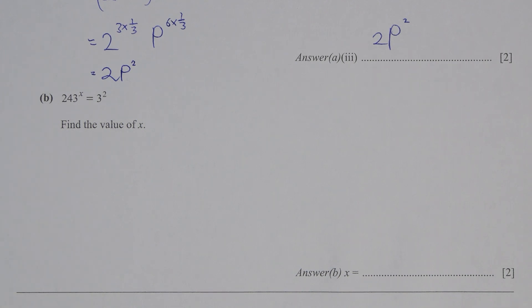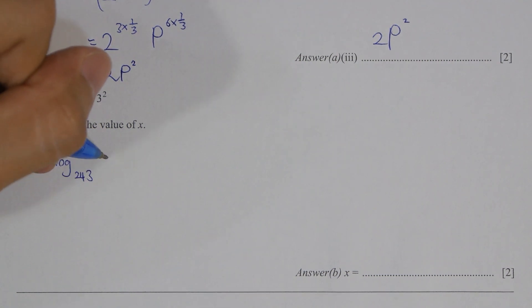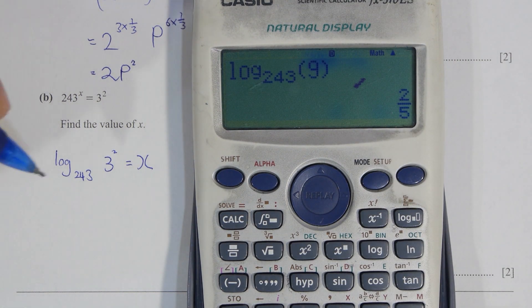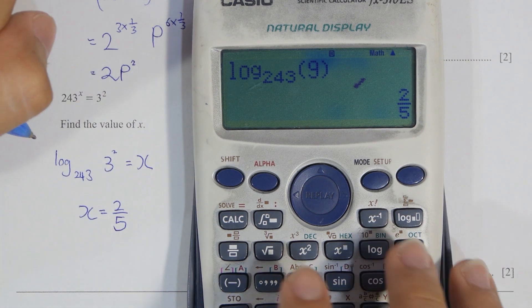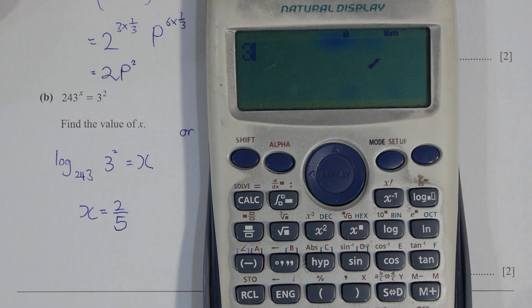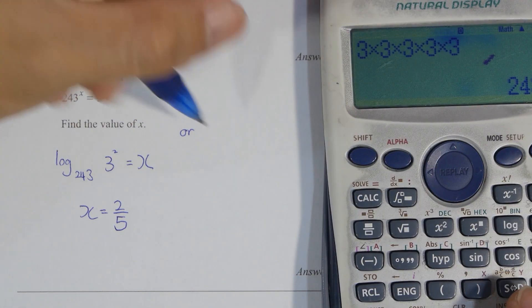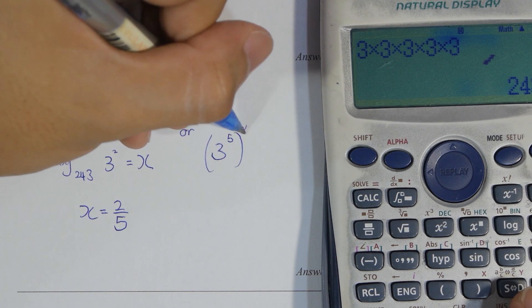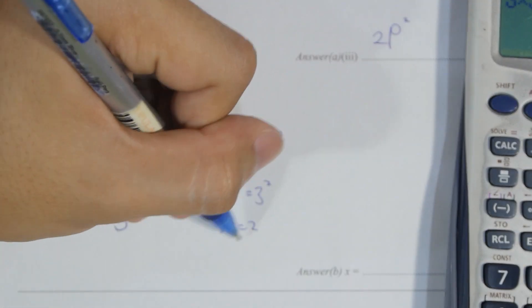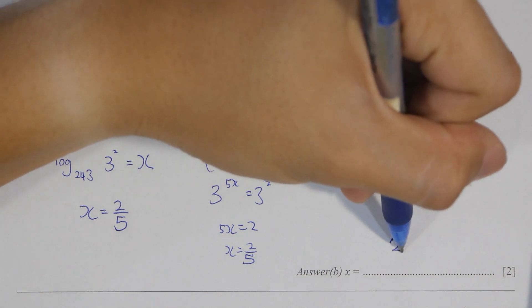For part b there's two alternative methods. The first one is actually logarithm, so the base will actually be 243 and the value is 3 to the power of 2 equals to x, so x value will actually be 2 over 5. Alternatively you can change 243 into 3 to the power of 5, so 5x equals to 3 to the power of 2, x equals to 2 over 5. Two different methods but you will get the same answer, so you choose whichever you are more comfortable with.